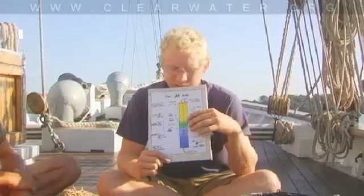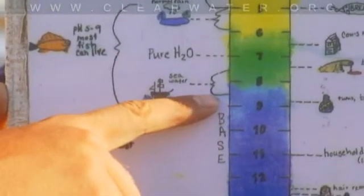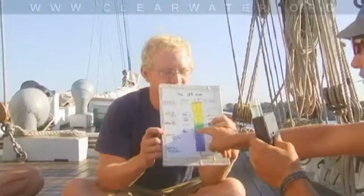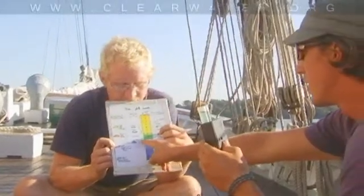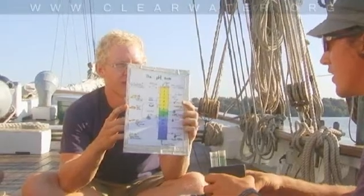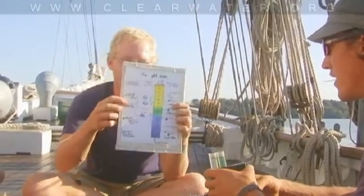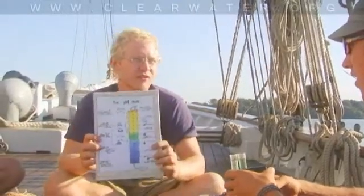Right here in the middle, 6 to 8, is a neutral range in the green. What did we get for our pH? 8.5 — that corresponds to sea water on the scale. Do you see the pH range where fish are happiest? 5 to 9, right here. So as far as pH is concerned, the fish around here are in good shape.